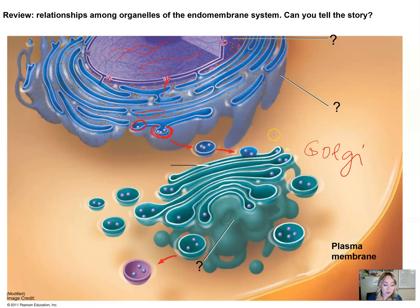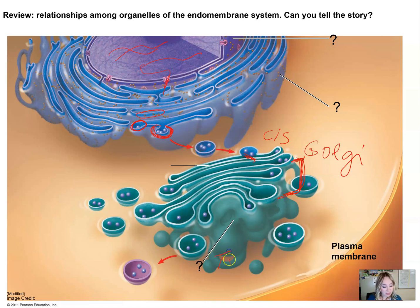This vesicle is now fusing with the cis face of the Golgi. The proteins are going to be further modified as they travel through the medial cisterna, and then eventually they will end up at the trans face of the Golgi. This is where another vesicle is pinched off, which now contains the modified protein.